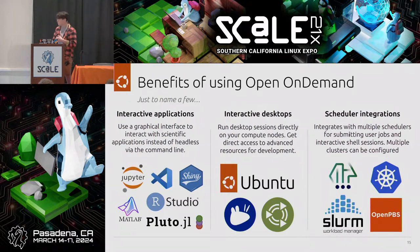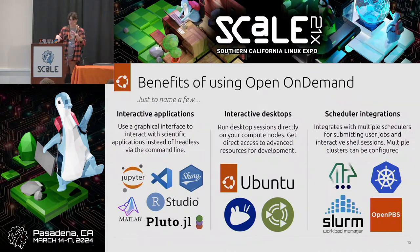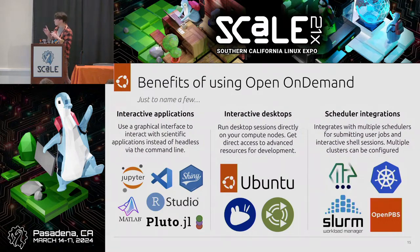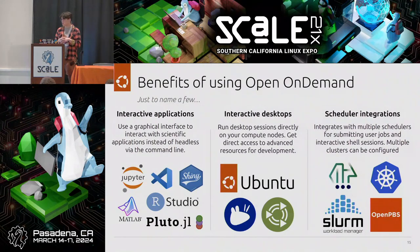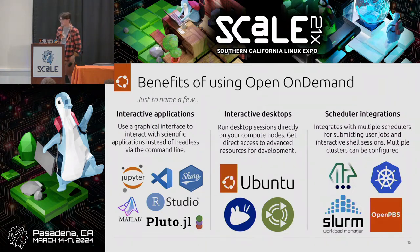Moving to the next category of benefits: interactive desktops. Open On Demand gives you the ability to get graphical sessions through VNC directly on your compute nodes. If you're not a terminal person, instead of typing in batch scripts, you can launch a desktop session directly on your cluster. Examples include default Ubuntu with GNOME, XFCE — which I've also heard called 'Xforce' — and MATE.